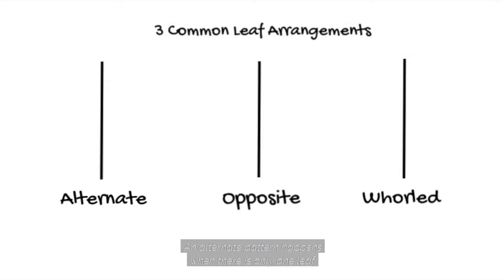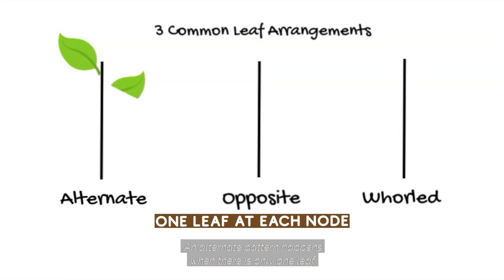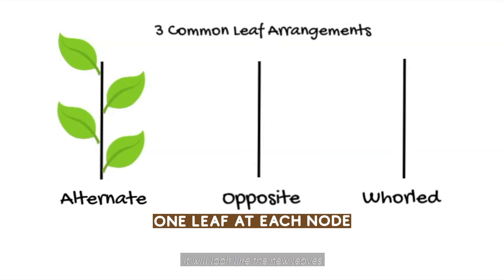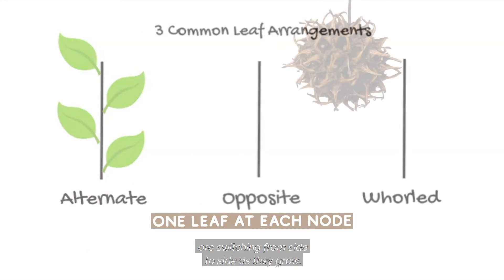An alternate pattern happens when there is only one leaf on each node — the point where the leaf attaches to the stem or branch. It will look like the new leaves are switching from side to side as they grow.